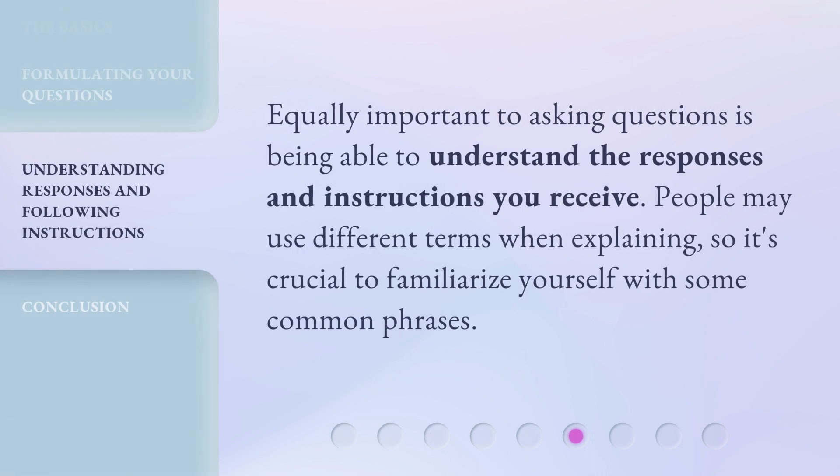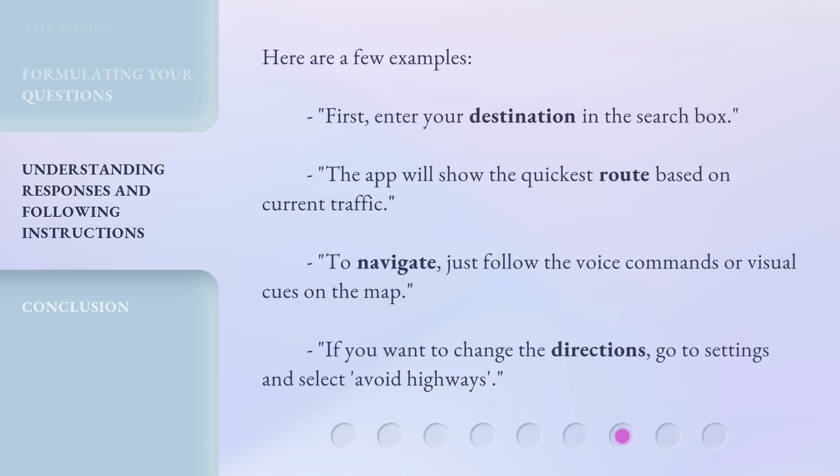Equally important to asking questions is being able to understand the responses and instructions you receive. People may use different terms when explaining, so it's crucial to familiarize yourself with some common phrases. Here are a few examples: First, enter your destination in the search box. The app will show the quickest route based on current traffic. To navigate, just follow the voice commands or visual cues on the map. If you want to change the directions, go to Settings and select Avoid Highways.